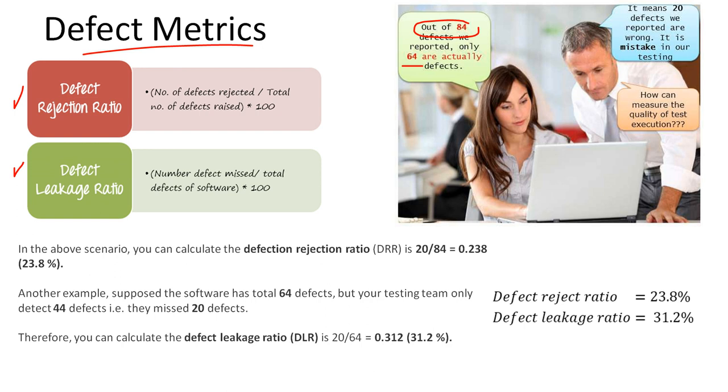Defect rejection ratio means we reported some defects to the developer and the developer rejected those defects because they are invalid. What is defect leakage? We haven't found those defects. We left those defects in the application. We could not find them. That's called defect leakage - how many defects we leave in the application.